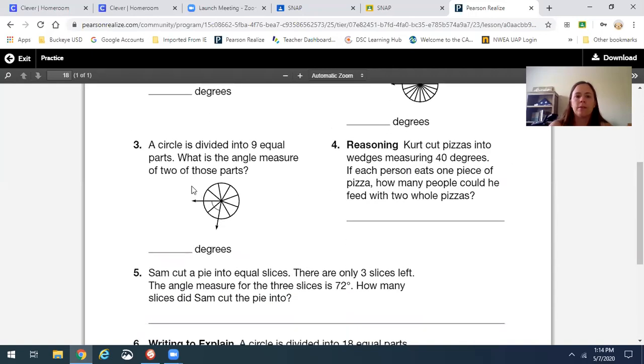Same thing here. You're going to divide it by 9. Then they want to know about two of those parts. So 360 divided by 9, and then what is the angle of these two, the measure of these two.